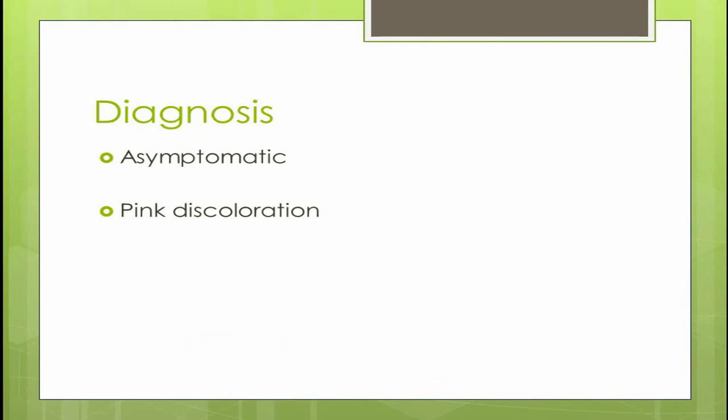Since these lesions are asymptomatic, diagnosis is difficult. If the coronal portion is affected, a pink discoloration can be seen through the crown, and the vitality test may show a positive or negative response, because coronal to the site of resorption there will be necrotic pulp through which there will be constant entry of microorganisms. Whereas apical to the area of resorption there will be vital pulp tissue, and because of that the vitality test may show a positive response. Diagnosis is made from the radiograph, in which a symmetric radiolucency of the pulp chamber or the root canal is appreciated.